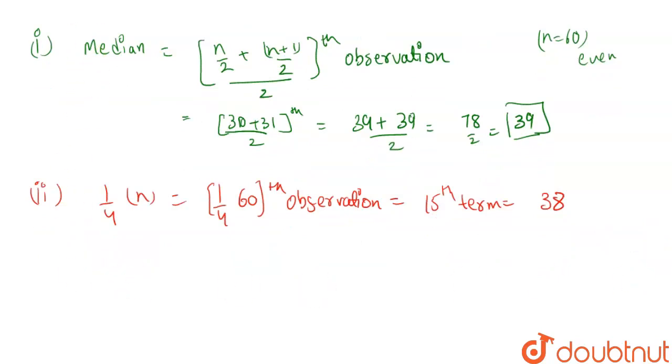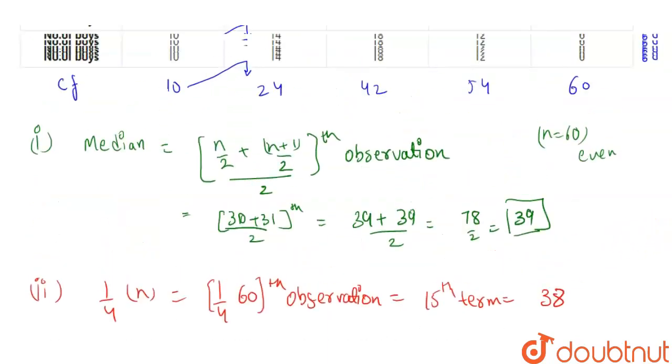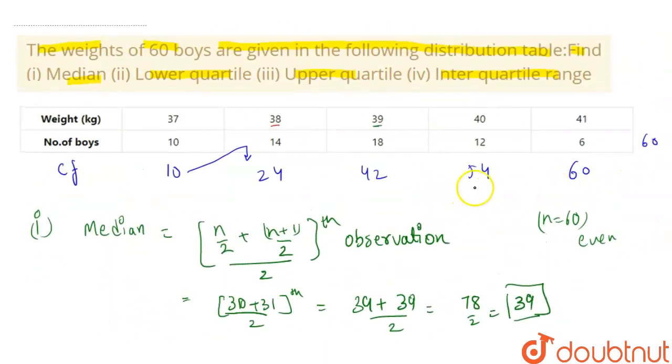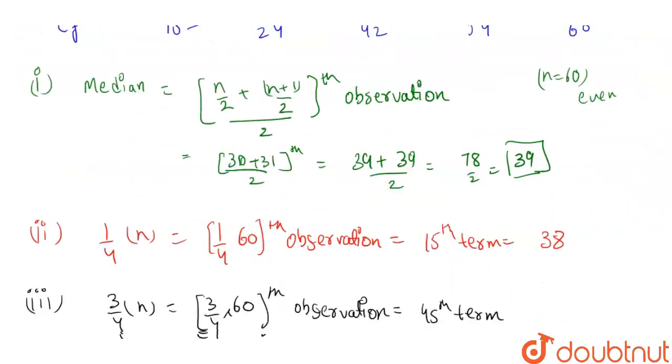Now third part was upper quartile. Upper quartile means 3 by 4th of n, that is 3 by 4 of 60th observation. This will be our upper quartile. So this becomes 3 by 4 of 60 is 45th term. So 45th term, we'll see 54. So 40 is our upper quartile.